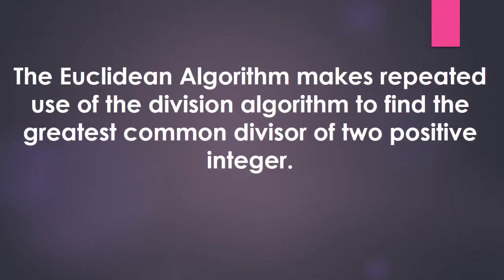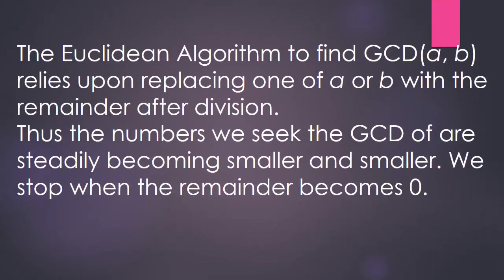The Euclidean algorithm makes repeated use of the division algorithm to find the greatest common divisor of two positive integers. The Euclidean algorithm to find GCD(A, B) relies upon replacing one of A or B with the remainder after division. Thus, the numbers we seek the GCD of are steadily becoming smaller and smaller; we stop when the remainder becomes zero.